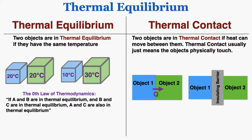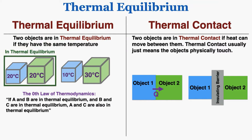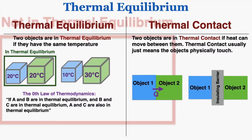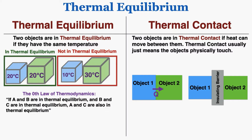This lecture is about thermal equilibrium. Thermal equilibrium itself is a very simple idea. Two objects are in thermal equilibrium if they have the same temperature. That's all the word itself means. So these two objects here are both at 20 degrees, so they're at thermal equilibrium, and these two objects are not in thermal equilibrium because they're not at the same temperature. The definition itself is extremely simple.